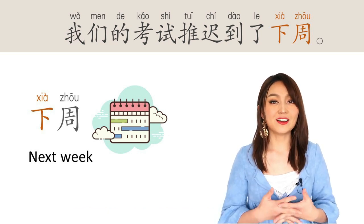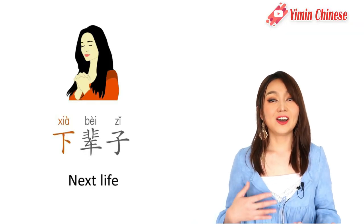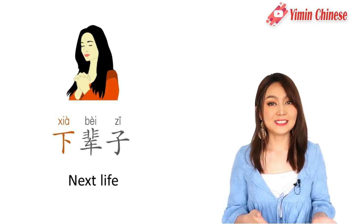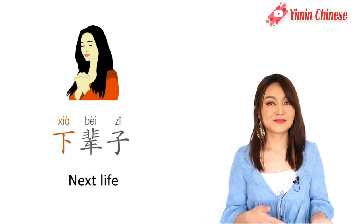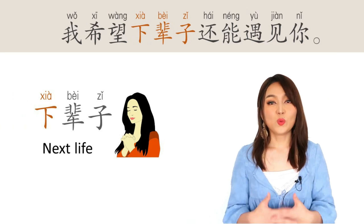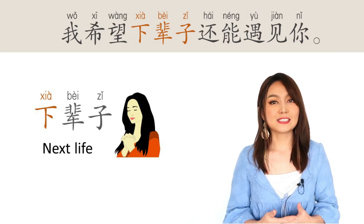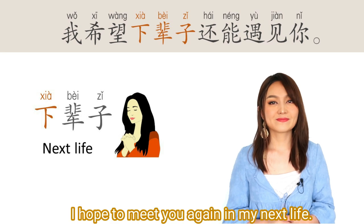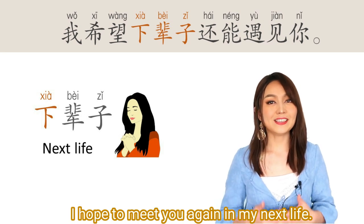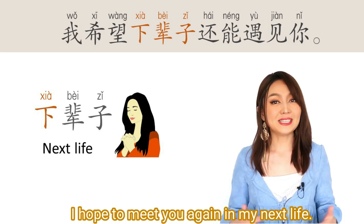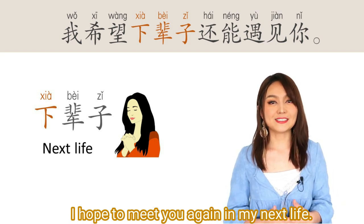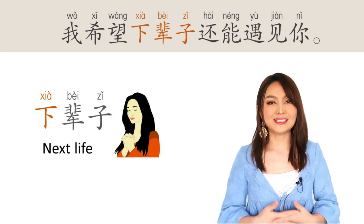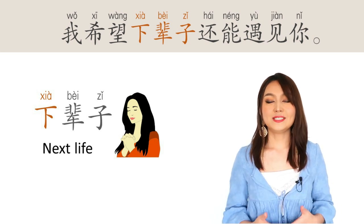Or 下辈子 — it means 'next life.' 下辈子. For example: 我希望下辈子还能遇见你. I hope to meet you again in my next life. A very romantic sentence you can use.